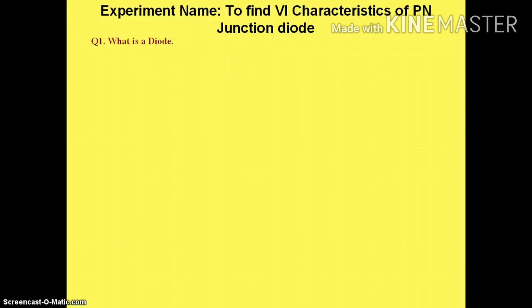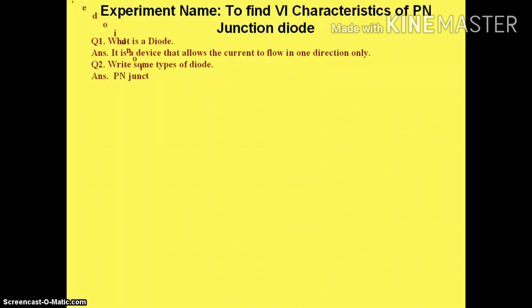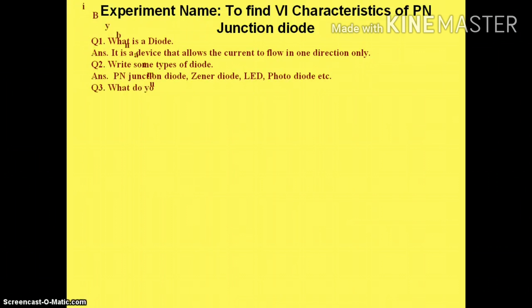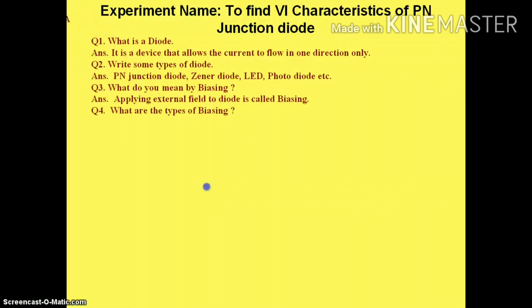The next experiment is to find the VI characteristics of the PN junction diode, or voltage-current characteristics of the PN junction diode. First question: what is a diode? A diode is a device that allows current to flow in one direction only. Second question: write some types of diodes — PN junction diode, Zener diode, light emitting diode, photodiode, etc. Next: what do you mean by biasing? Applying an external field to the diode is called biasing. What are the types of biasing?